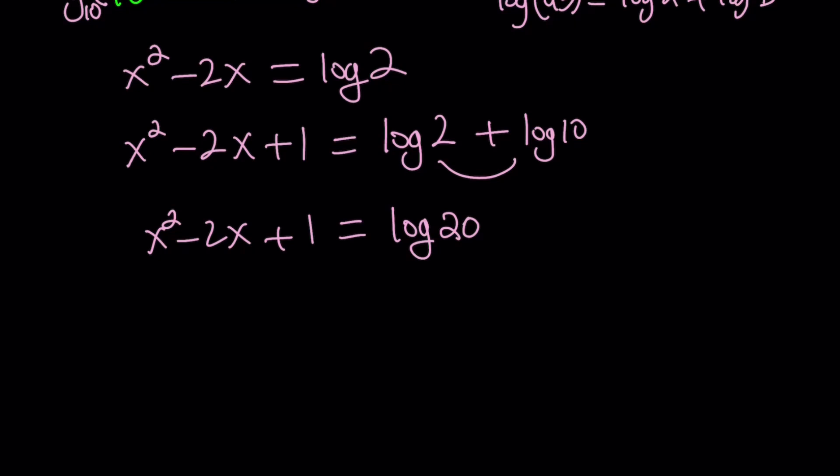So now we've got a perfect square. So the next step should be writing it as the square of a binomial. So we're going to write it as x minus 1 squared equals log 20. Now we've got to be careful. Log is only defined for positive numbers. But we're not logging a variable so we're good. We are actually setting the log of something equal to a variable.